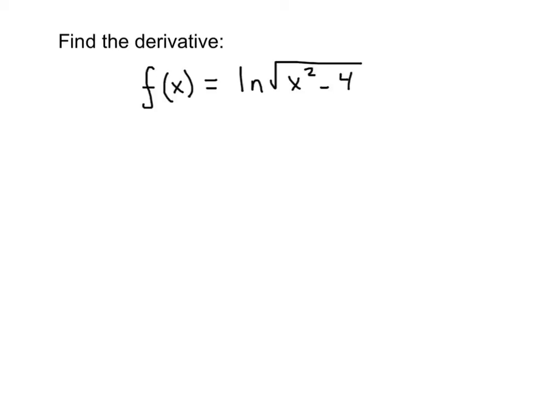So we're asked to find the derivative of f of x which equals the natural log of the square root of x squared minus 4. This happens to be page 377 number 26 in the textbook that we're using.